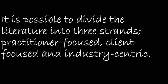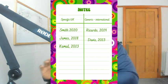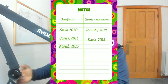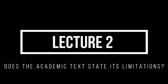For example, it is possible to divide the literature into three strands: practitioner-focused, client-focused, and industry-centric. These categories were invented by you. You realized that some studies mostly focus on a particular aspect, so you categorize accordingly. As you start to read more, create a rough table in your notepad — on one side, state the generic studies you come across, and on the other side, state the specific studies.